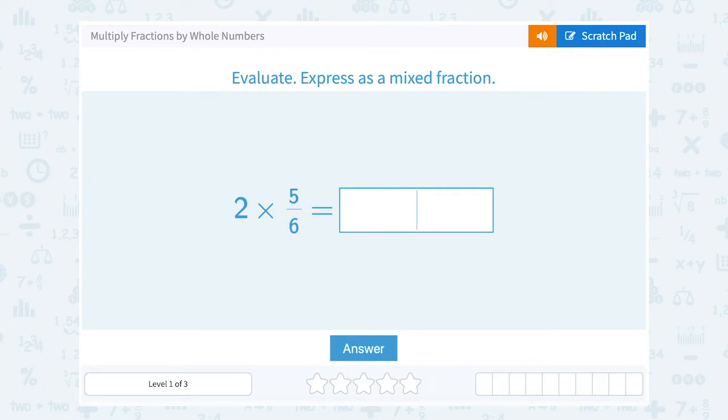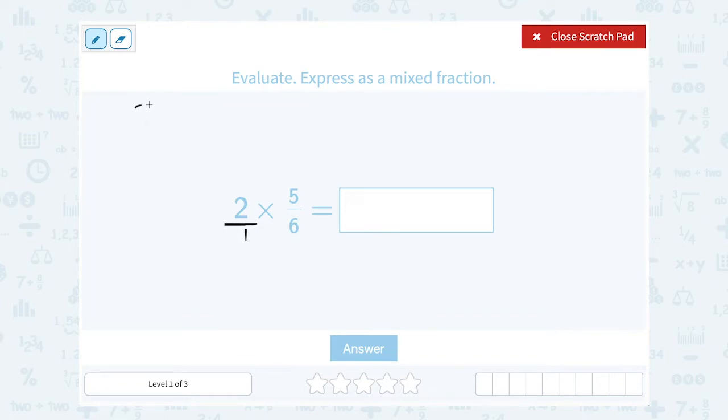When you're multiplying with fractions, it's nice to write the whole number as a fraction as well. You can write any whole number as a fraction by putting it over 1. 2 over 1 is the same thing as just 2. So when I multiply, I'm going to think of this as 2 over 1 times 5 over 6.